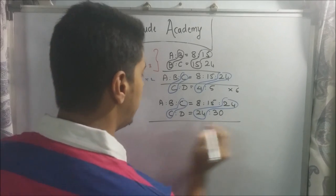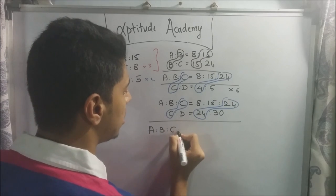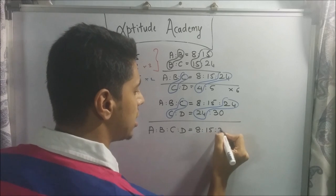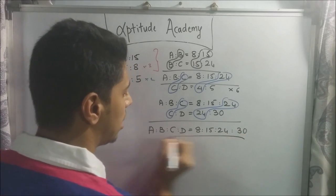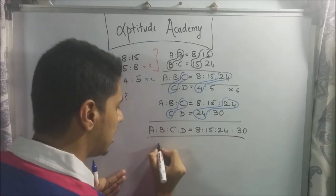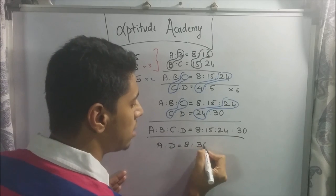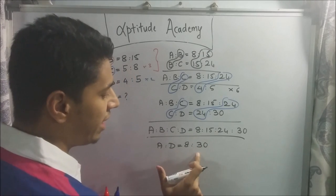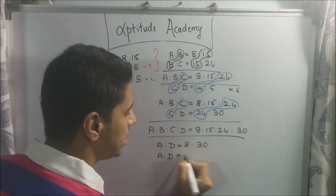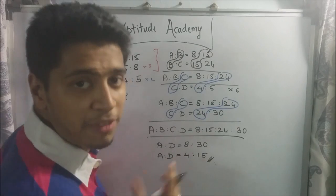So my final answer will be, a is to b is to c is to d is equal to 8 is to 15 is to 24 is to 30. Now they've asked you, what is a is to d? So a is to d is 8 is to 30. So a is to d is equal to 8 is to 30. But this is not the most refined form of this. If I divide this by 4, I can get the, by 2, I can get the final form. So a is to d is equal to 4 is to 15. This is my final answer.